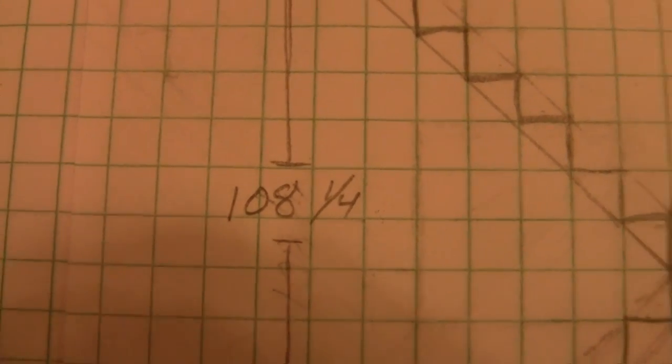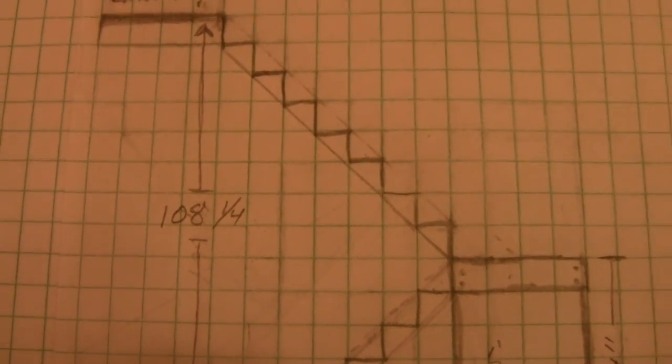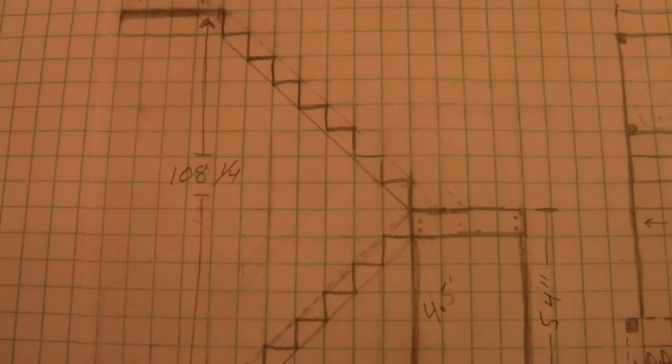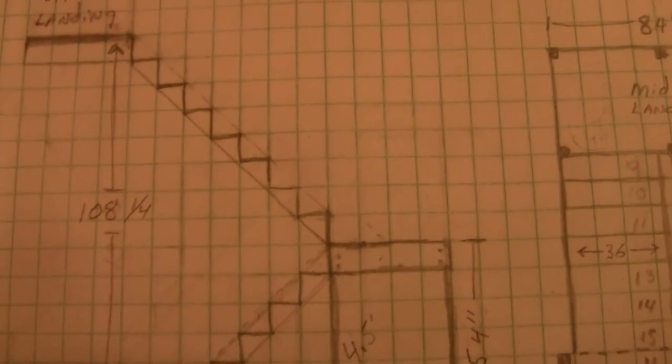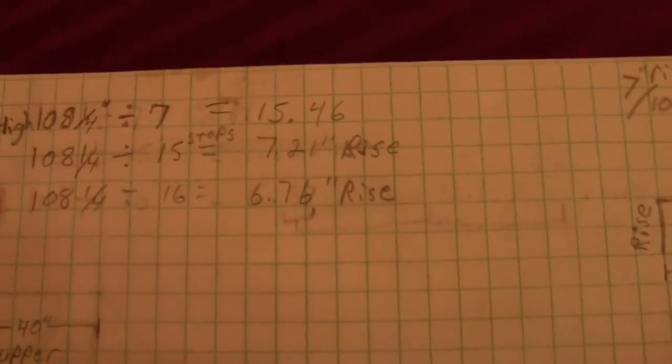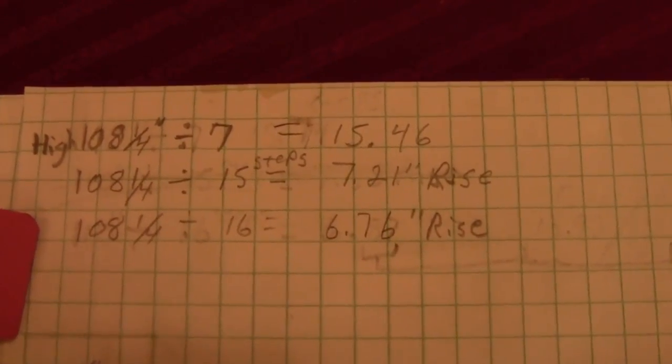Now I found that the height from the top of the stairs, or the landing at the top, to the ground is 108 and a quarter inches. Now what do I do with that? Well, I want to find out how many units of 7 will come out of that.